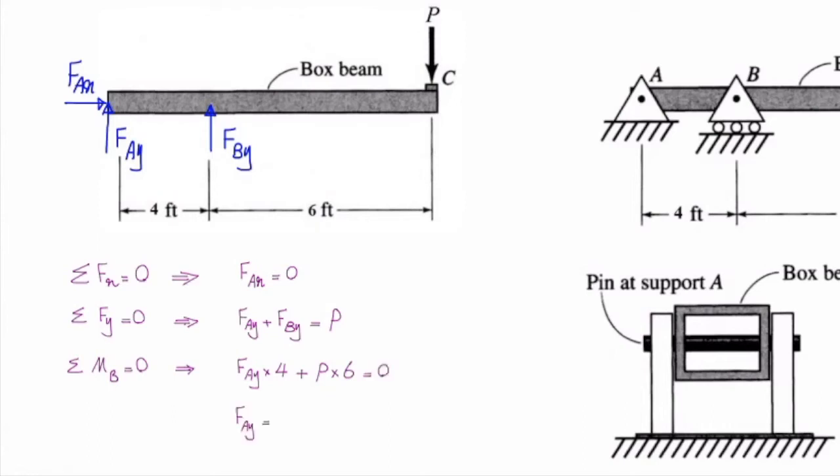Now from this equation, I can determine how much is FAy. FAy would be negative six over four times P. P is 3,000 pounds, so that gives me FAy equal to negative 4,500 pounds.